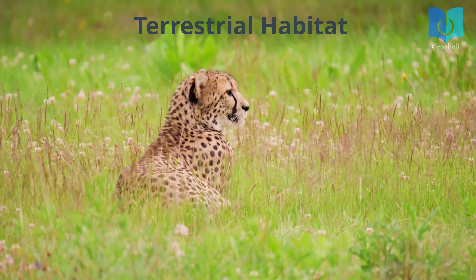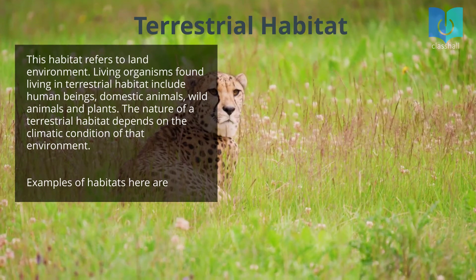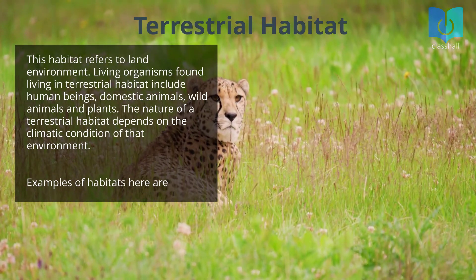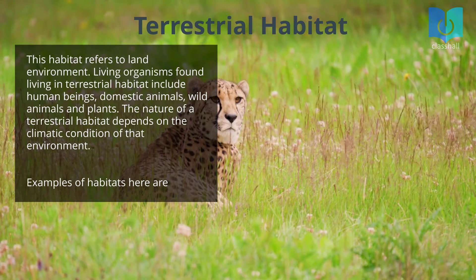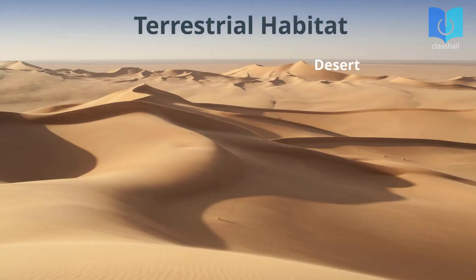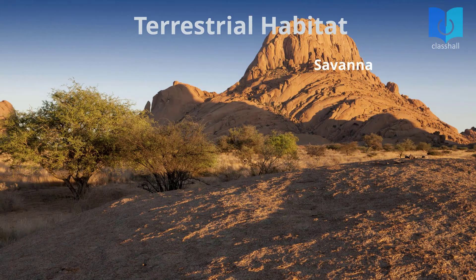Two: terrestrial habitat. This habitat refers to the land environment. Living organisms found in terrestrial habitat include human beings, domestic animals, wild animals, and plants. The nature of a terrestrial habitat depends on the climatic condition of that environment. Examples of habitats here are desert, forest, and savannah.